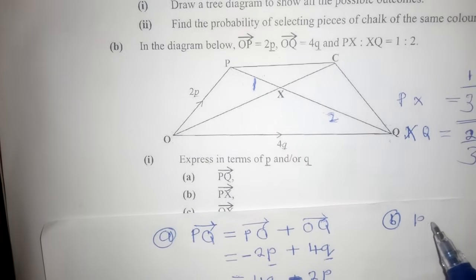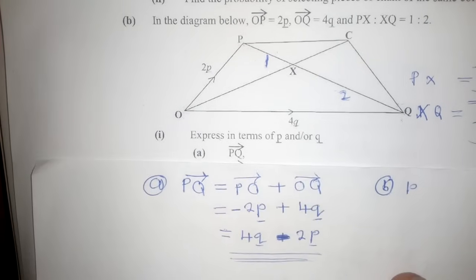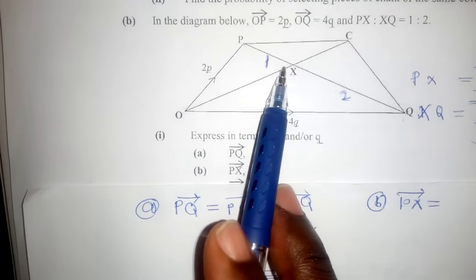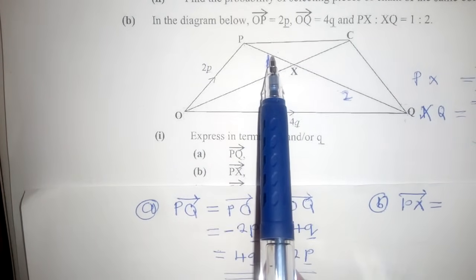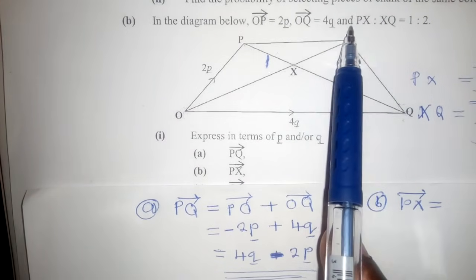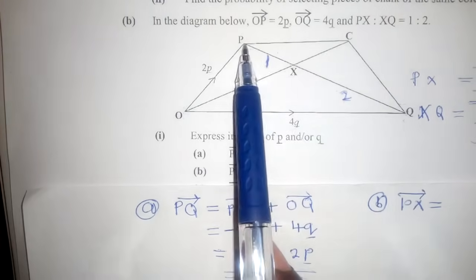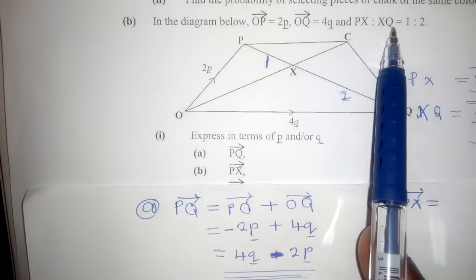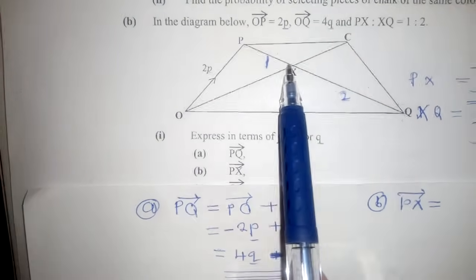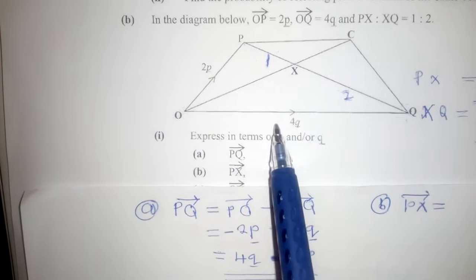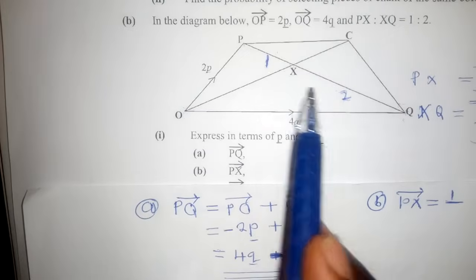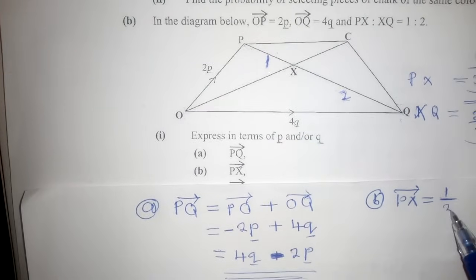We go to part (b). They ask us to find vector PX. That is why I explained the numbers I wrote here — PX is represented by 1 and XQ is represented by 2. So X divides PQ in the ratio 1:2. When it comes to vectors, to find distance PX, you take the ratio value for PX, which is 1, over the total, which is 1 plus 2 equals 3.